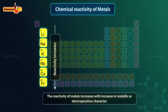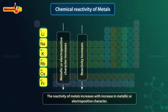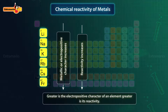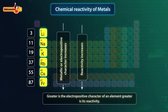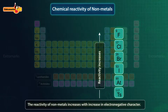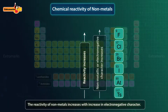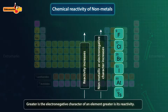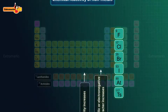The reactivity of metals increases with increase in metallic or electropositive character. Greater the electropositive character of an element, greater would be its reactivity. On the other hand, the reactivity of non-metals increases with increase in electronegative character. Thus, greater the electronegative character of an element, greater is its reactivity.